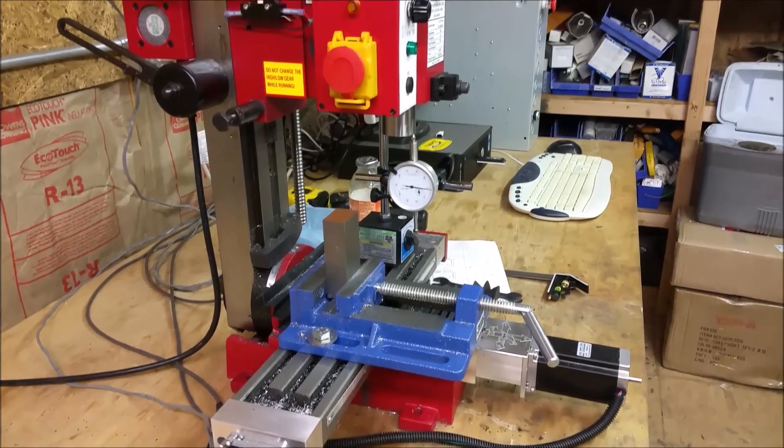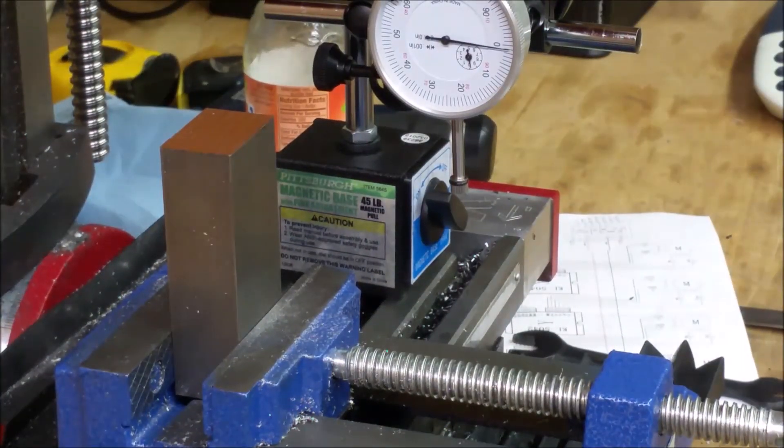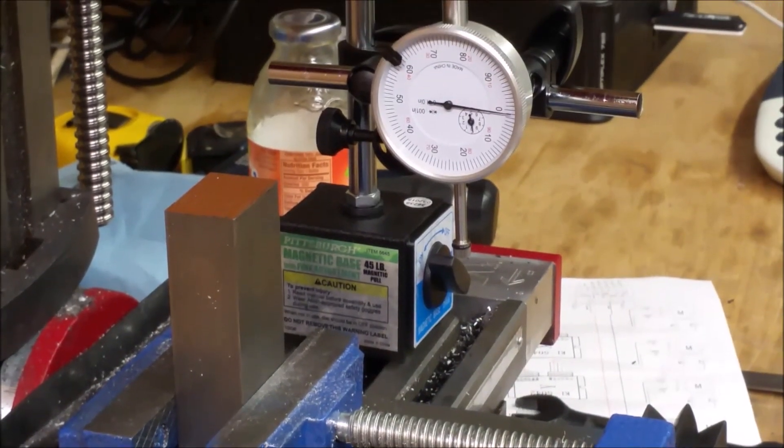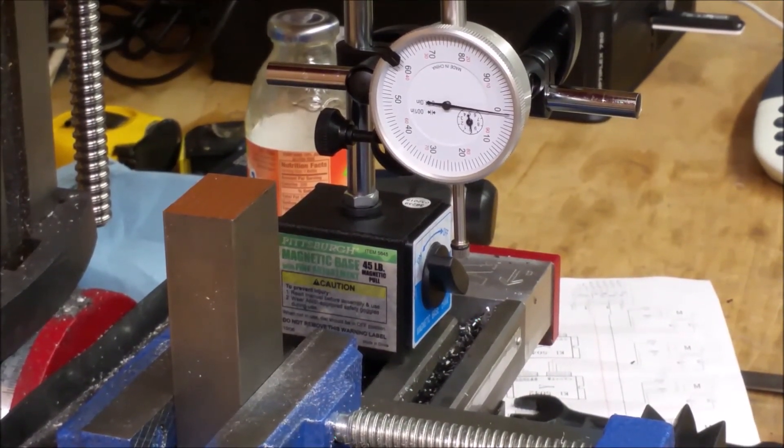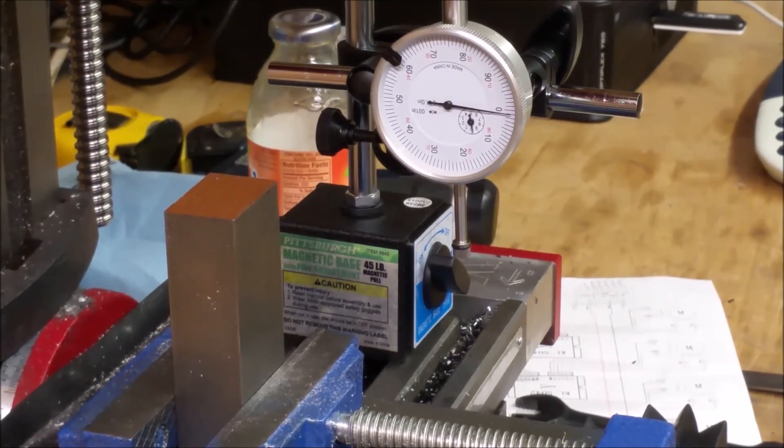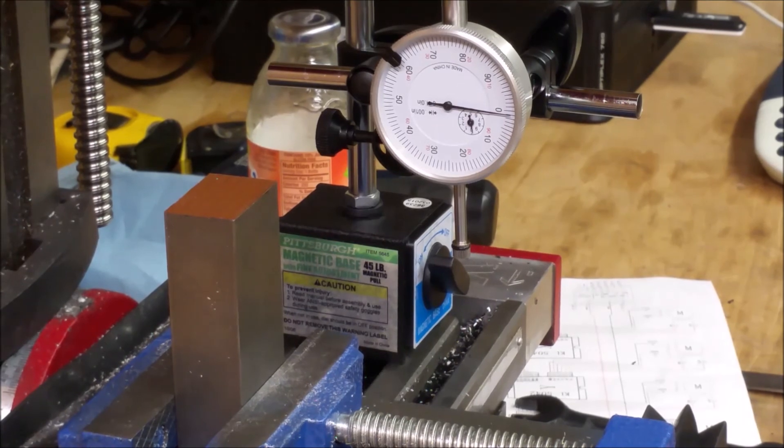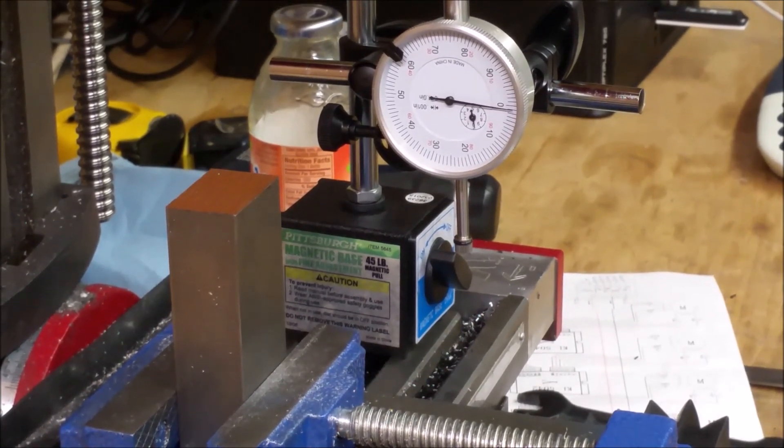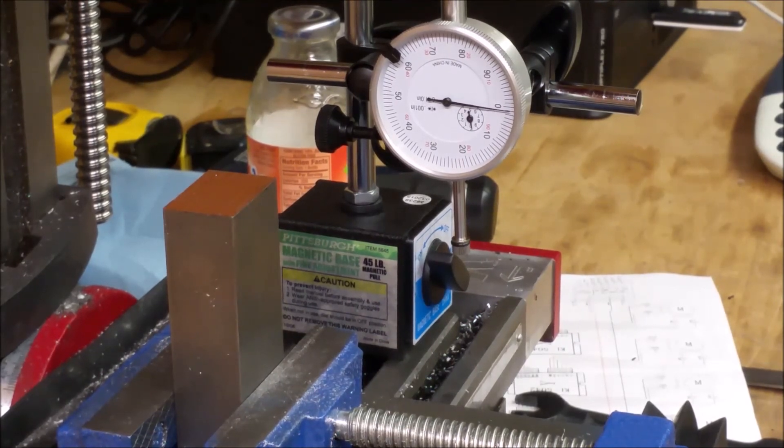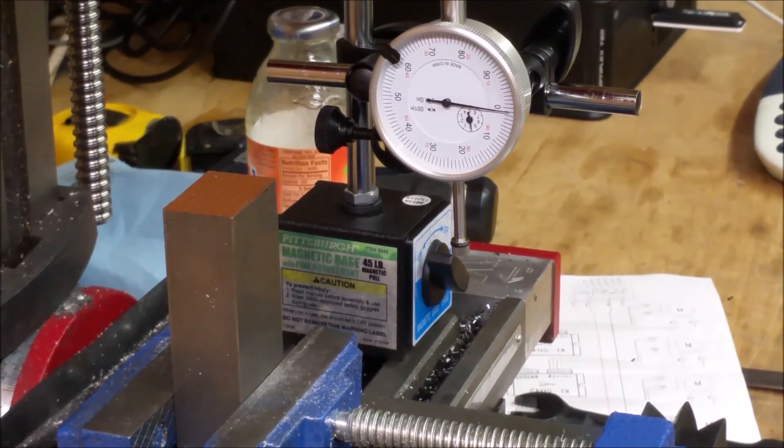Alright, I got it perfect that time. You can see I had it at one thou over, and I hit one inch, and it went to one inch and one thou over. So the z is perfect, or at least within a half a thou or so. Alright.